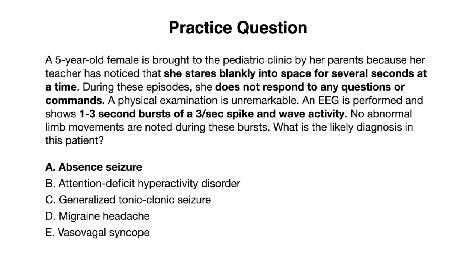Let's look at some of the other answer choices to see why they're incorrect. B, attention deficit hyperactivity disorder or ADHD, would be incorrect here because we don't have any evidence of hyperactivity, and also there would not be any impairment of consciousness with ADHD. Generalized tonic-clonic seizure is incorrect here because there are no abnormal limb movements noted during these episodes. Migraine headache is incorrect because there is no evidence of a headache, and migraines would not lead to any impairment of consciousness. Vasovagal syncope is incorrect here because it would lead to a loss of consciousness and not an impairment of consciousness, and this is due to a drop in blood pressure and heart rate.